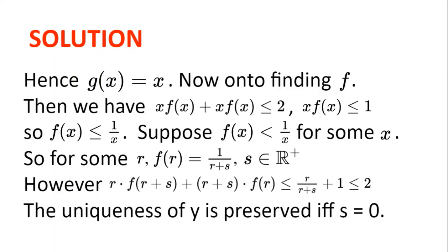But how about testing whether y is still unique? Perhaps y = r + s also satisfies the inequality. And indeed it does, since r·f(r+s) + (r+s)·f(r) ≤ r/(r+s) + 1, because f(r+s) ≤ 1/(r+s) and f(r) = 1/r + s, which gives a value ≤ 2, so it satisfies the inequality. We get a contradiction: s cannot be a positive real, and so f(r) = 1/r to preserve the uniqueness of y.